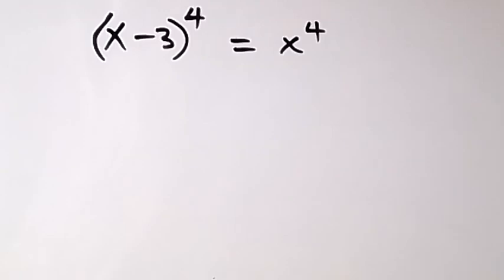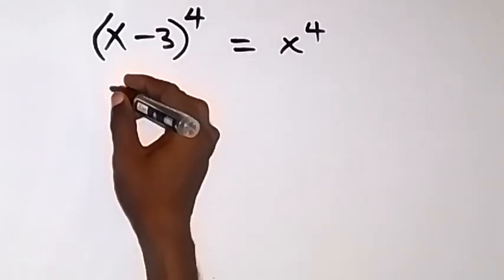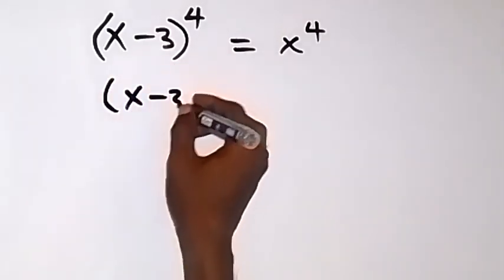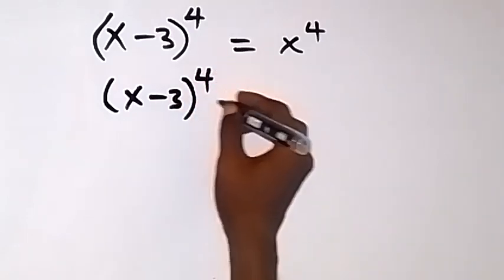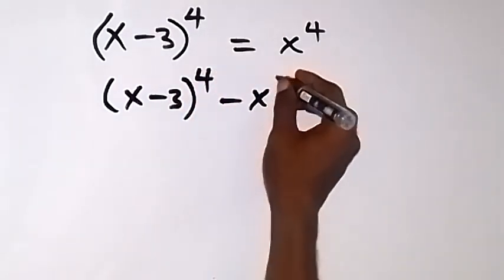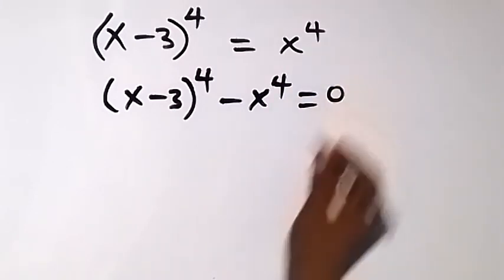Thank you for joining us. Here, let's solve this problem. We are finding the values of x. We can take x raised to the power 4 to this side such that we have x minus 3 raised to the power 4, then minus x raised to the power 4, equals 0.